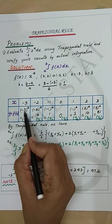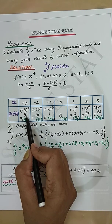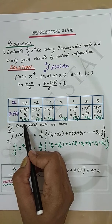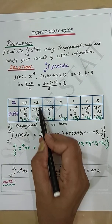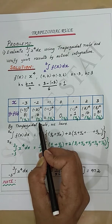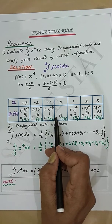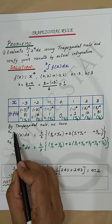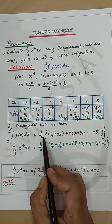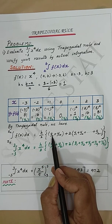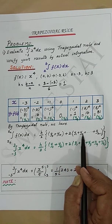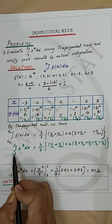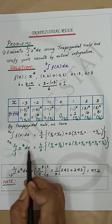When x = −3, f(x) = (−3)⁴ = 81, which is y₀. When x = −2, f(x) = 16, which is y₁, and so on. By the trapezoidal rule, the integral from x₀ to xₙ of f(x) dx equals h/2 times [y₀ + yₙ + 2(y₁ + y₂ + ... + yₙ₋₁)]. Therefore the integral from −3 to 3 of x⁴ dx equals h/2 times [y₀ + y₆ + 2(y₁ + y₂ + y₃ + y₄ + y₅)].